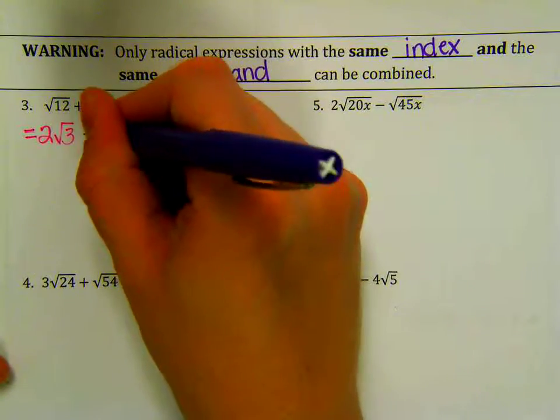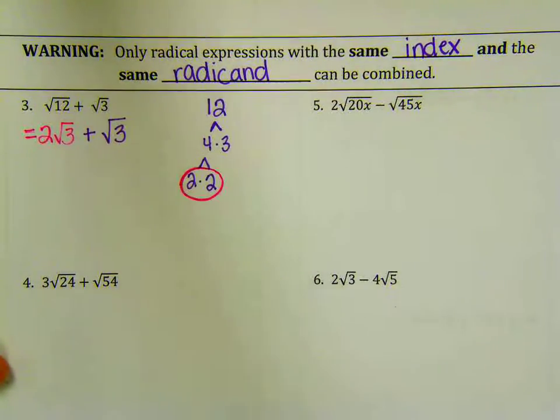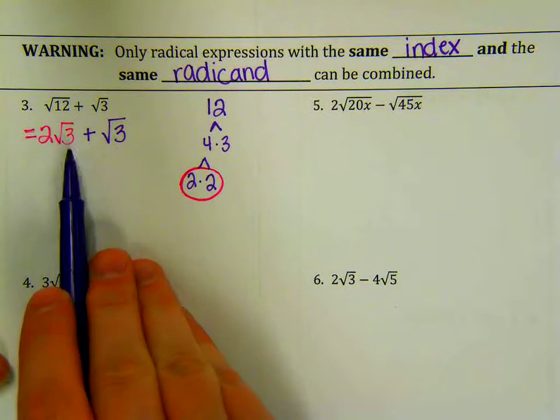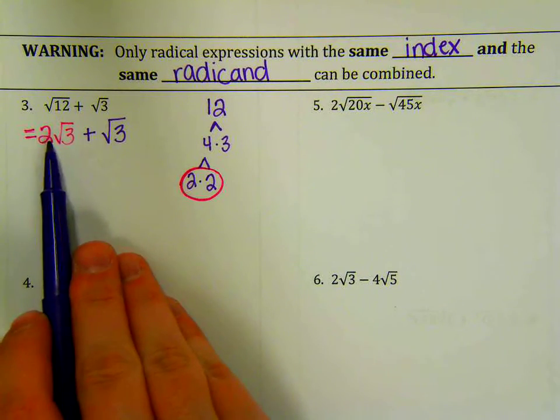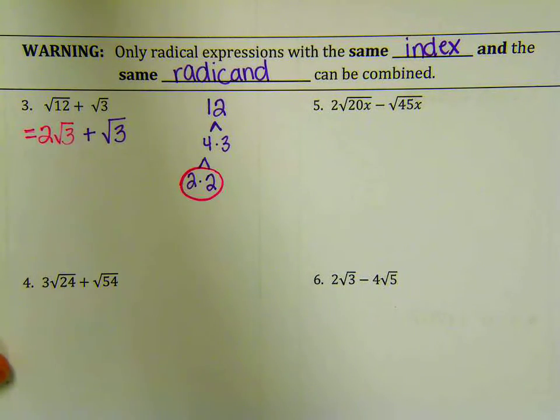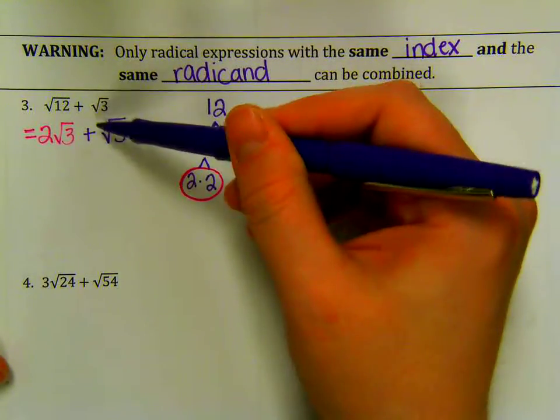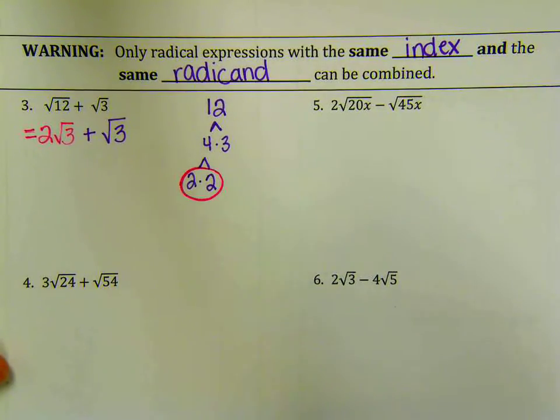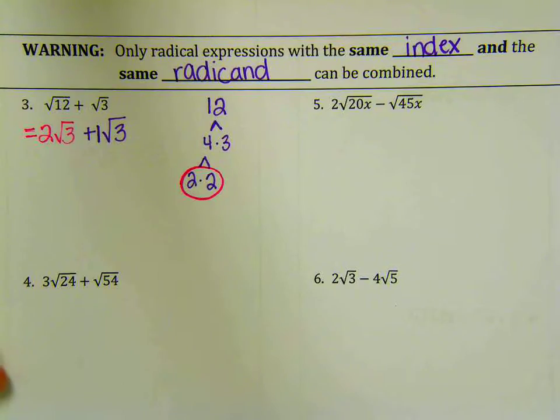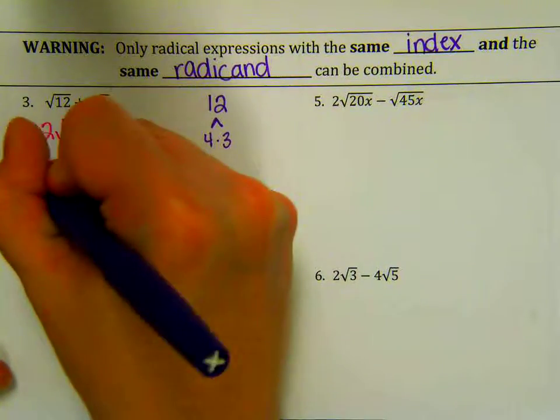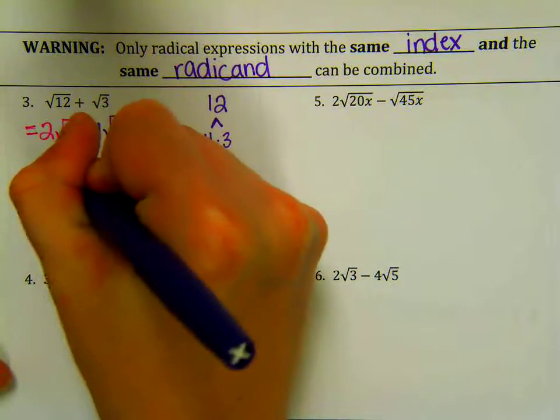My index is 2, so I'm looking for groups of 2. So I'm going to simplify that as 2 square root of 3. Because my 3 is left over. Then we have plus the square root of 3. Now we have the same radicand. They both have 3's. And we both have 2 as an index. So I can combine them. 2 root 3 plus the square root of 3. If there's no number out in front of here, what's that number? 1.